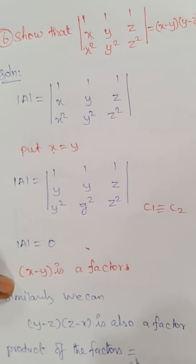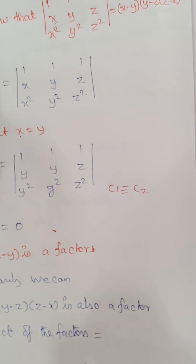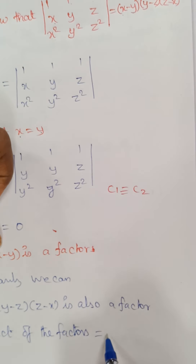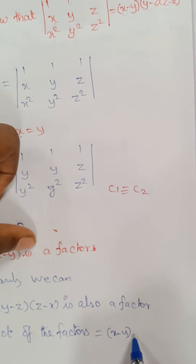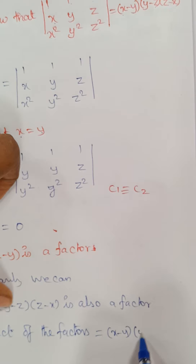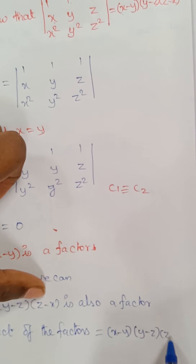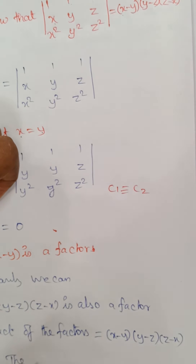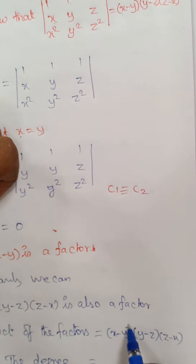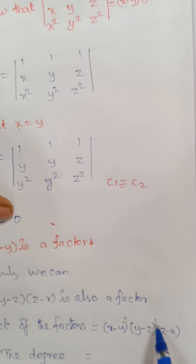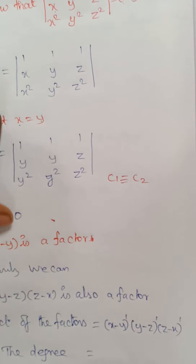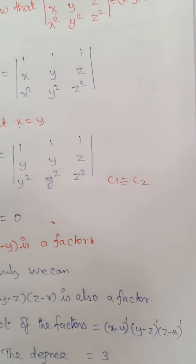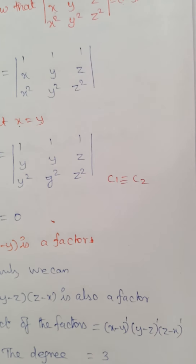The product of the factors is (x−y)(y−z)(z−x). Each factor has degree 1, so the degree of the product of factors equals 1+1+1 = 3. Next, we look at the leading diagonal.